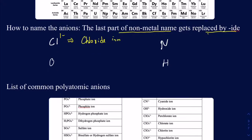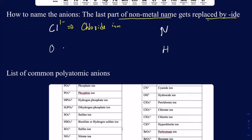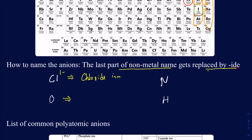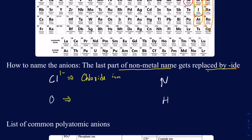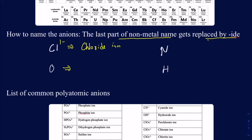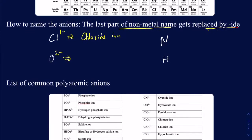What about oxygen? Oxygen is in Group 6A, which means it gains two electrons to become like a noble gas. So it becomes O²⁻. And its name? It's not called oxygen anymore — it becomes the oxide ion.